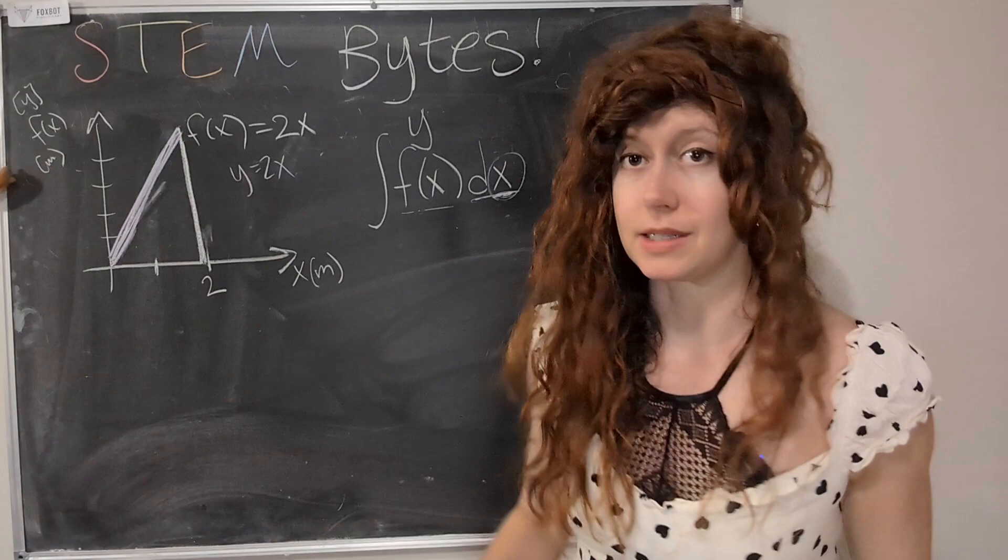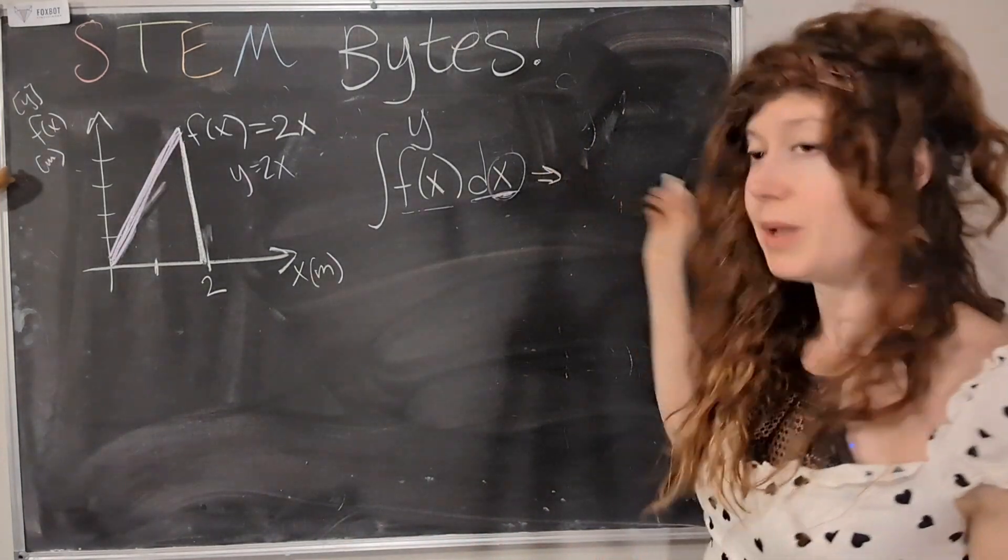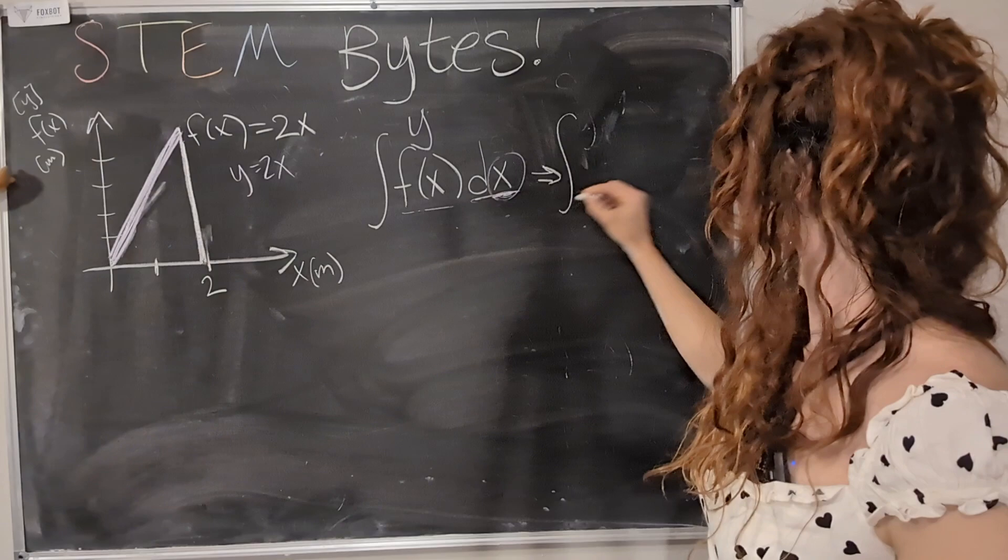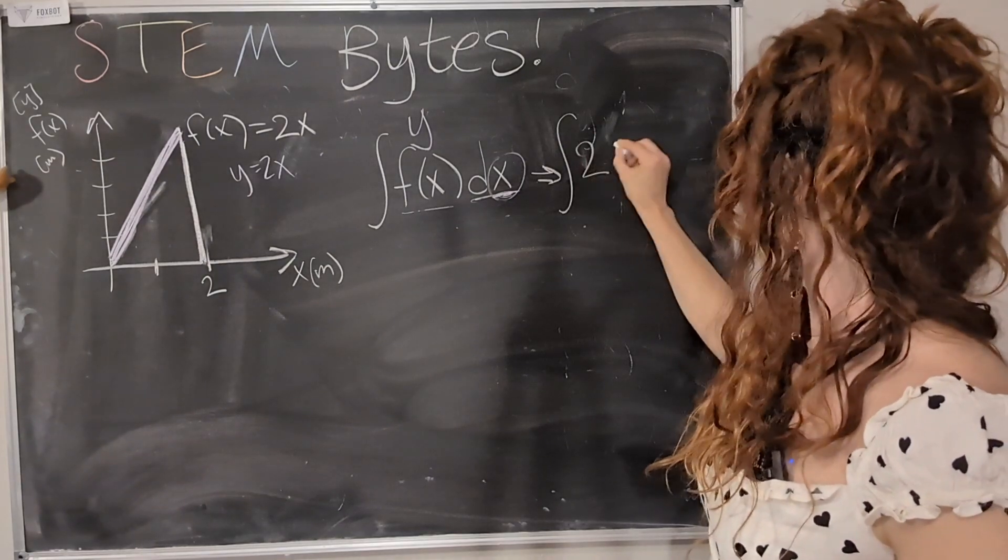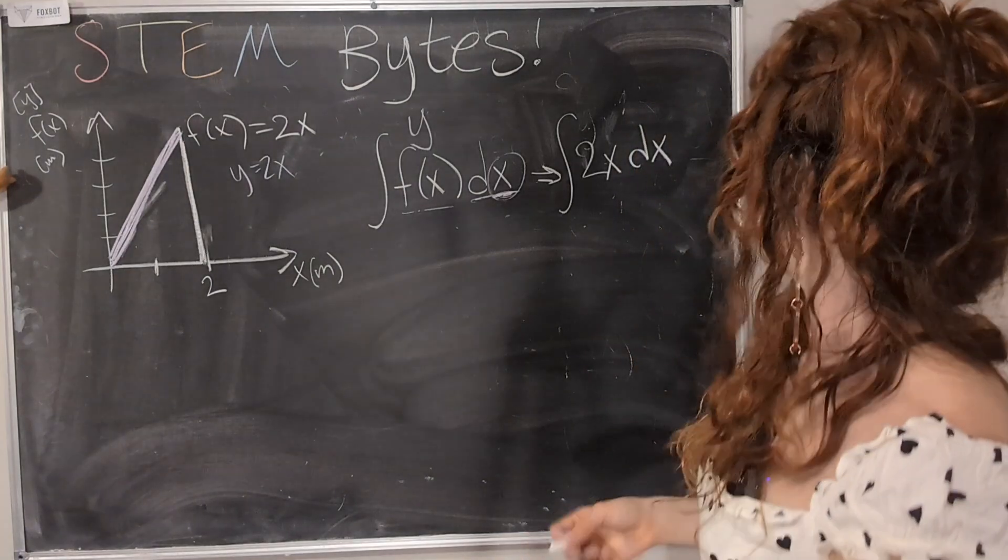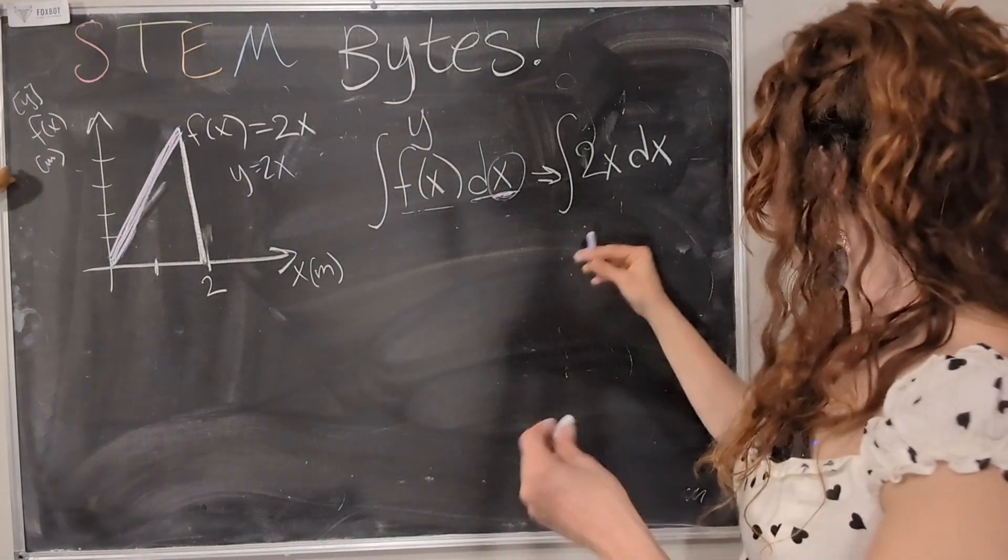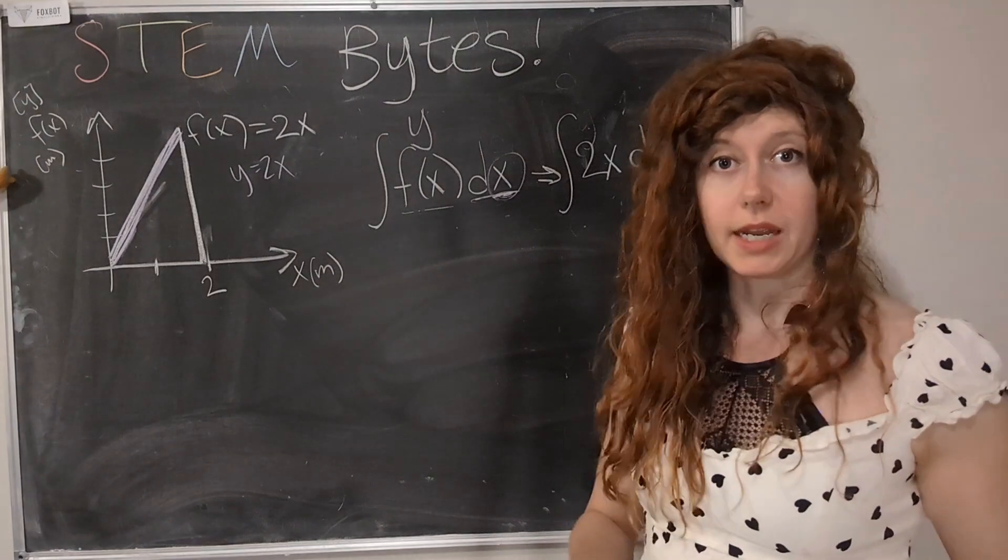So how do we do that? Well, we know what f of x is, right? We know what y is. And so we just replace it. So this would become the integral of 2x dx. And that we can solve. Holy stars, I wrote very up. Anyway, okay. So typically when we take an integral, we are taking the integral from some point to another point. And in this case, because we want to find how big this area is, we want to take the integral from 0, where we measured the length of our yard, to 2 meters.